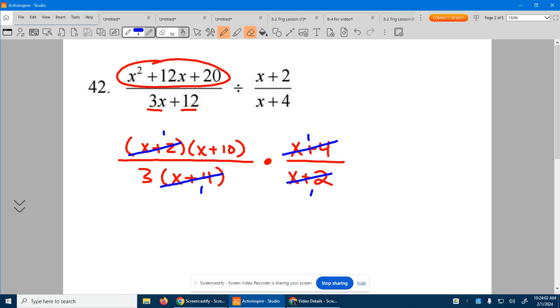So what do we have left up top? An x plus 10, and in the bottom, 3 times 1 times 1, which is 3. And there we have it simplified.